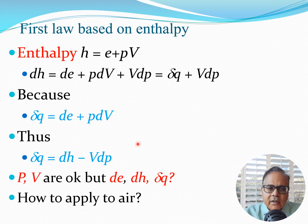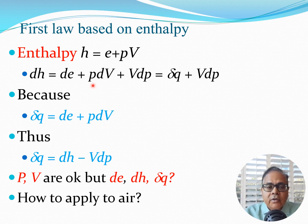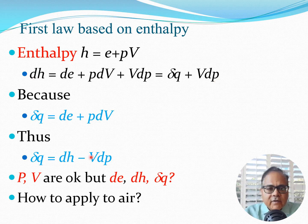Now let's look at another form of the first law using the concept of enthalpy. Enthalpy is defined as h = e + pv. Differentiating: dh = de + p·dv + v·dp (by the chain rule). Using the fact that δq = de + p·dv from the previous result, this part simply becomes δq, giving us dh = δq + v·dp, or equivalently δq = dh − v·dp.